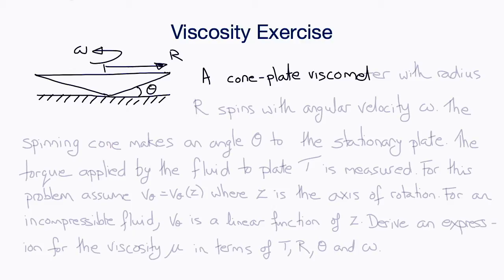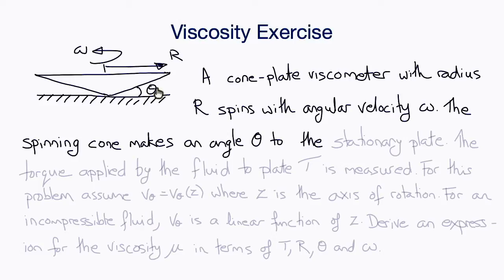In this exercise, consider a cone-and-plate viscometer with an outer radius R that is spinning with angular velocity omega. The spinning cone makes an angle theta to the stationary plate.